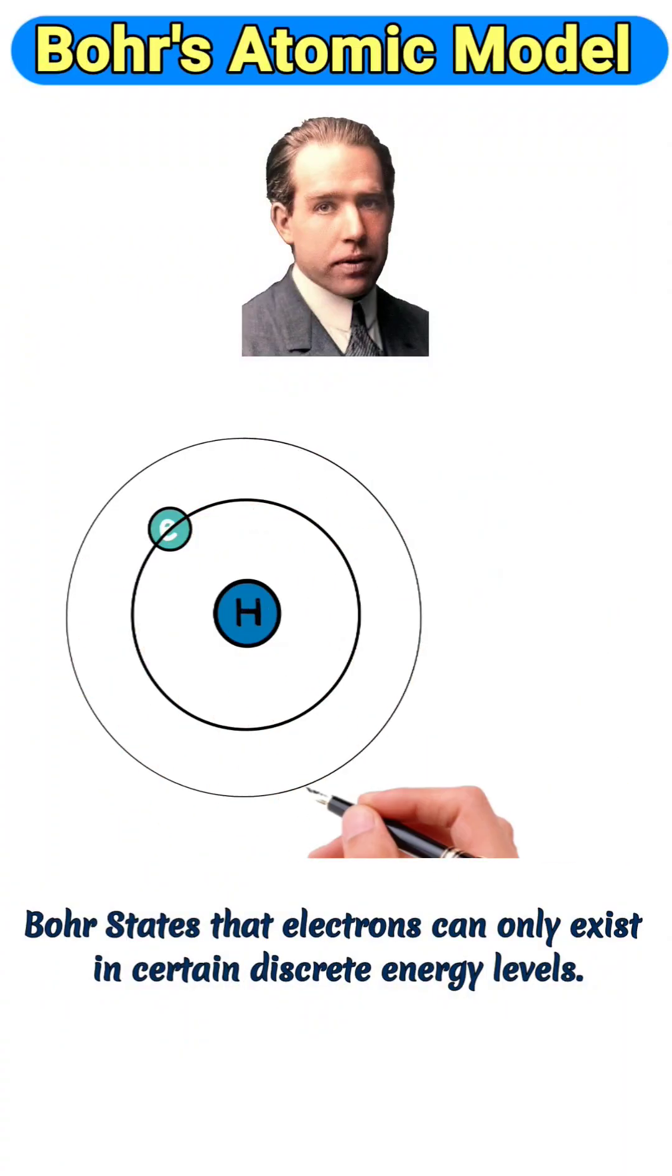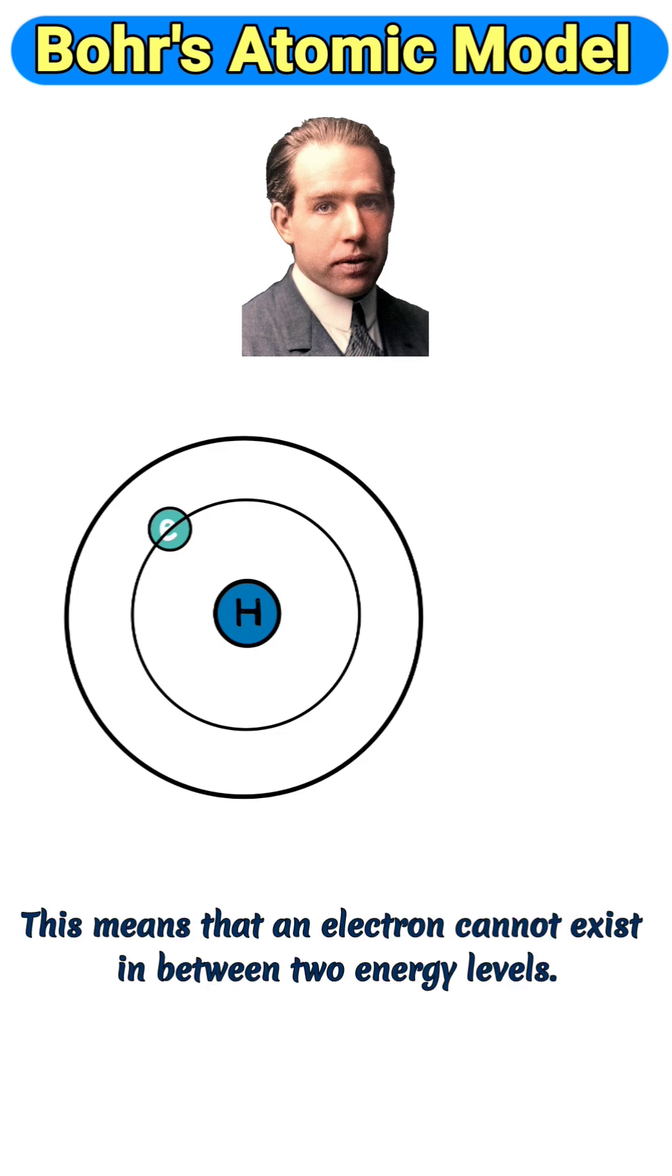Bohr states that electrons can only exist in certain discrete energy levels. This means that an electron cannot exist in between two energy levels.